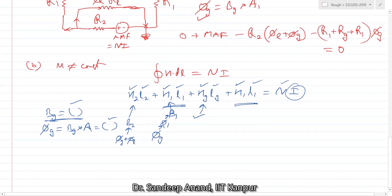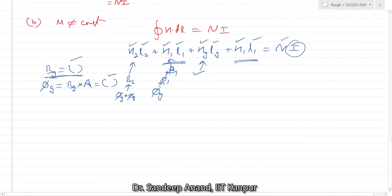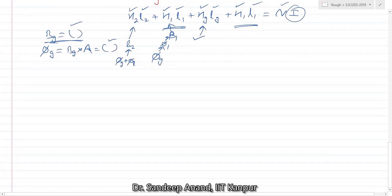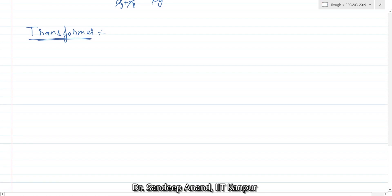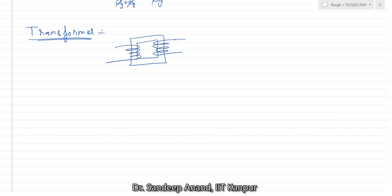With that we end our discussion on mutually coupled coils and now start discussing transformers. A transformer has a core with one winding on one side and another winding on the other side. This is essentially the same as a mutually coupled coil. Let's start with mutually coupled coil equations and derive the transformer equations from there.